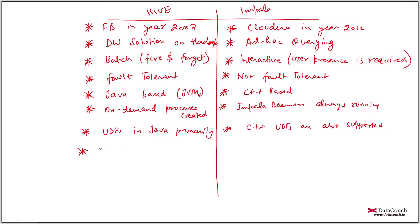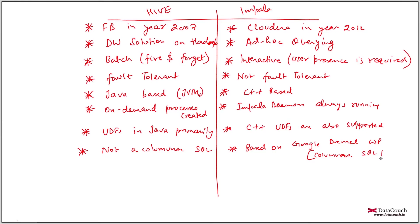Another important difference: Hive is not columnar SQL, but Impala is based on the Google Dremel whitepaper and performs columnar SQL processing. It creates a tree-like structure for different columns internally, then applies column pruning and predicate pushdown optimization techniques. So whatever columns you have in your data, it builds a tree structure and processes the query in an optimized manner using all the techniques mentioned in the Google Dremel whitepaper.